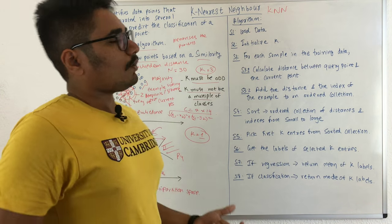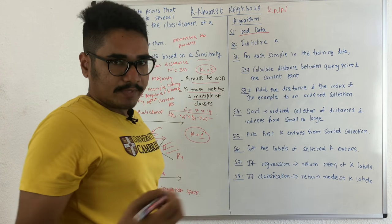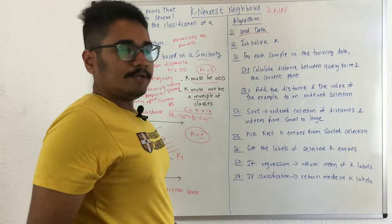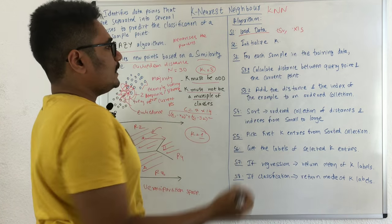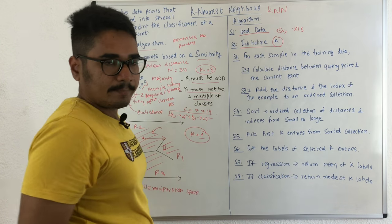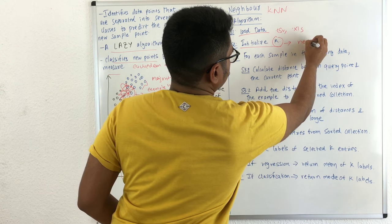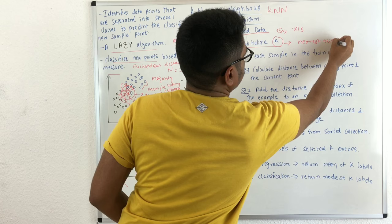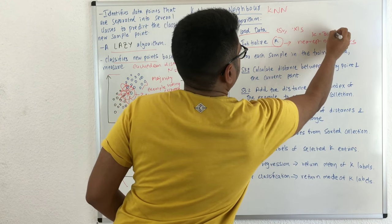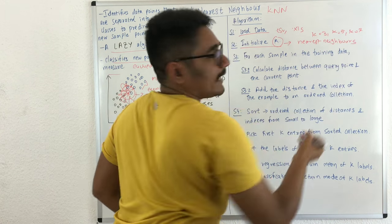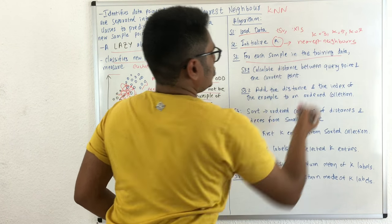Now let's talk about the KNN algorithm step by step. We start by loading the data — you have n number of data points loaded from a CSV or XLS file. Then you initialize k, which is a hyperparameter. You assign the nearest neighbors — k = 3, k = 5, or k = 7 — any odd number. That is the only condition. Then for each sample in the training data, you proceed with the algorithm.